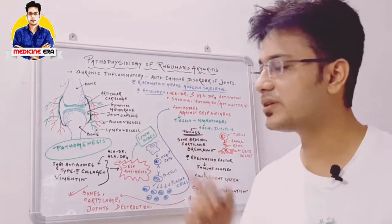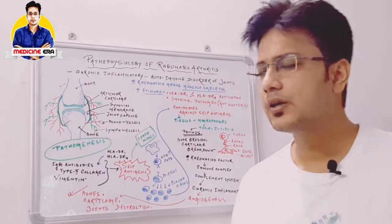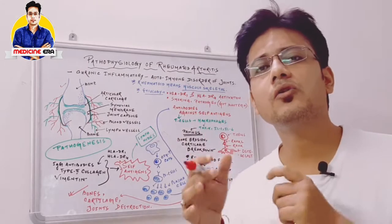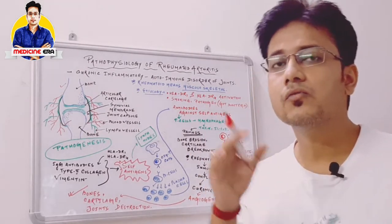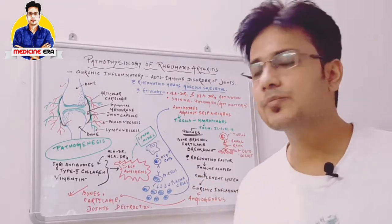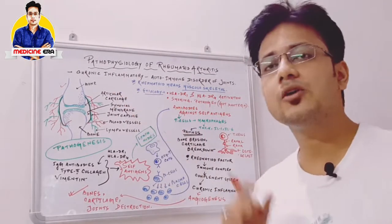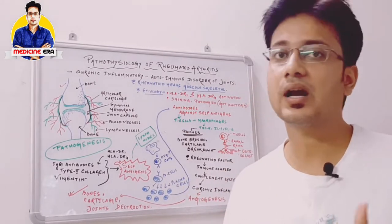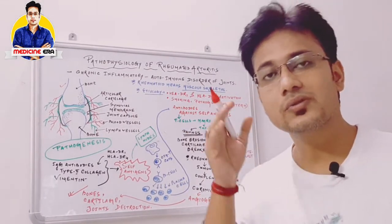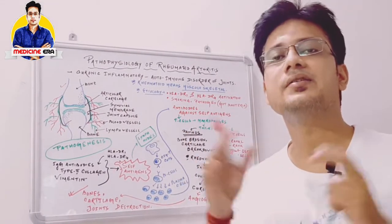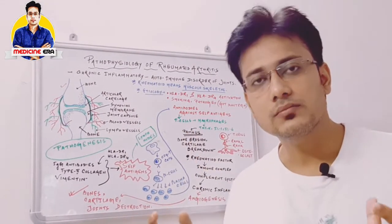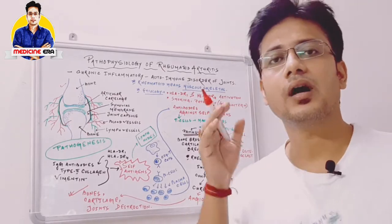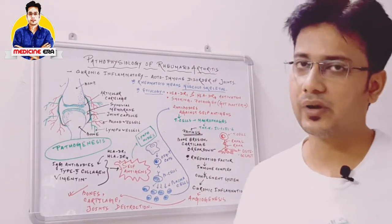There must be a different autoimmune reaction which is mainly responsible for the swelling of joints and destruction of bones and cartilages. This problem is known as rheumatoid arthritis.